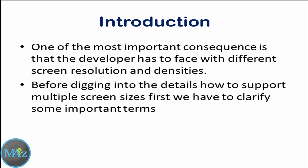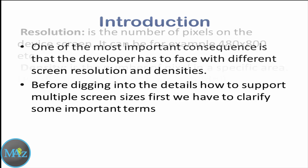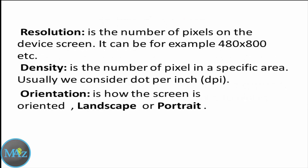Before digging into the details of how to support multiple screen sizes, we have to clarify some terms. First, resolution — resolution is the number of pixels on the device screen, for example 480 by 800. Next, density — it is the number of pixels in a specific area, usually measured in dots per inch or DPI. And orientation — it is how the screen is oriented, either landscape or portrait.